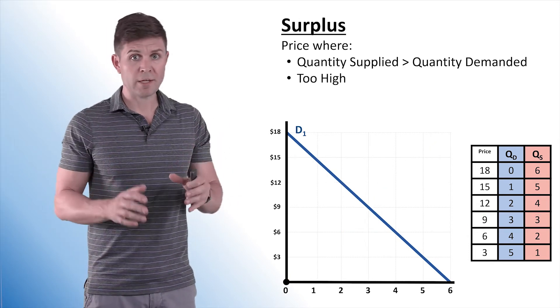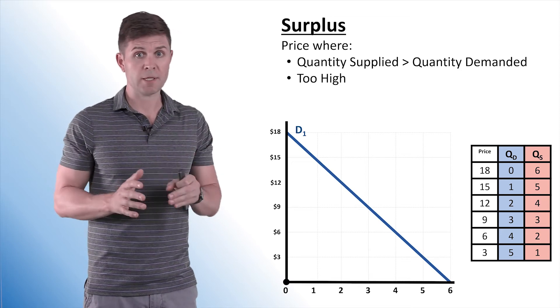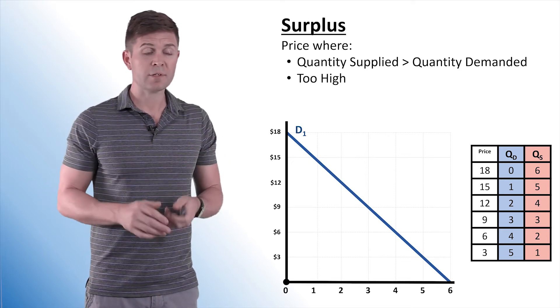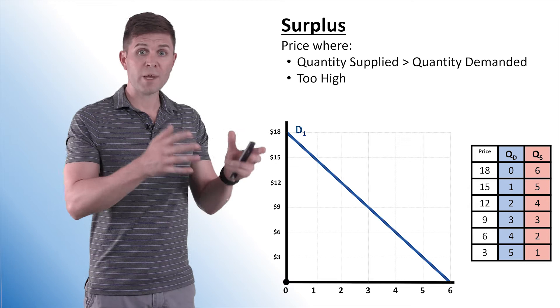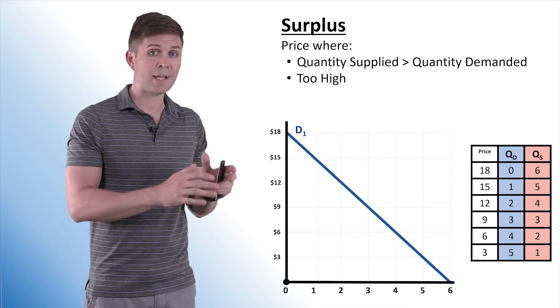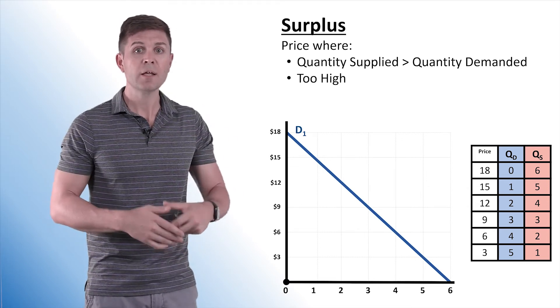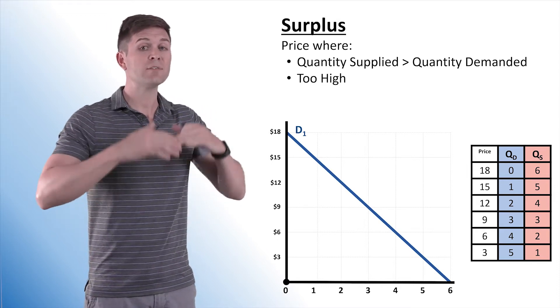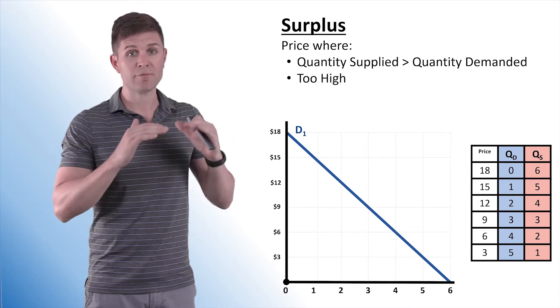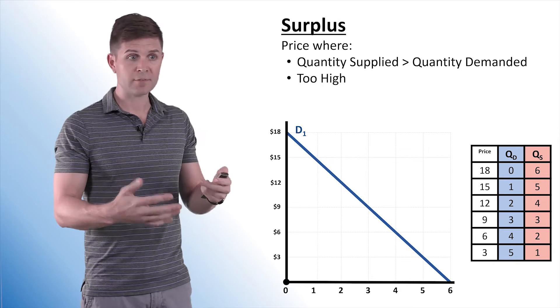Now, without government intervention, markets usually end up in equilibrium, but sometimes it takes a little time to get there. In some cases, we end up with a surplus. A surplus is when the quantity supplied exceeds the quantity demanded. There's extra product on the shelves. Price is usually too high and will eventually come down. But let's see how this gets started.